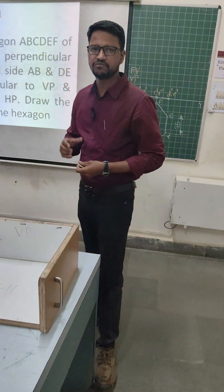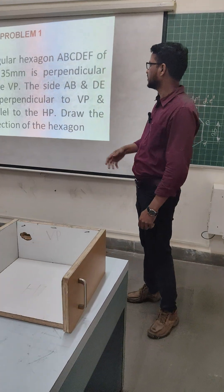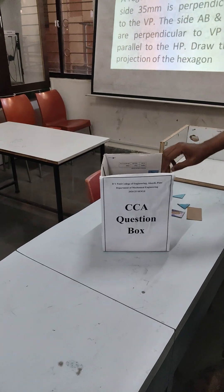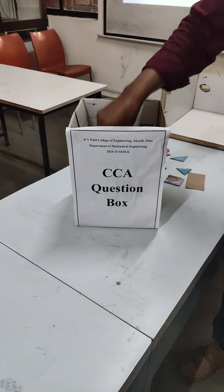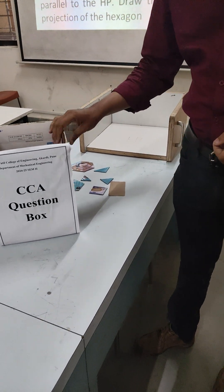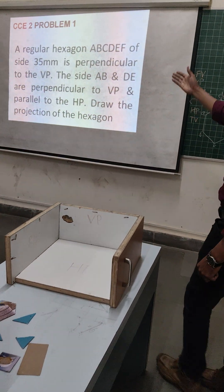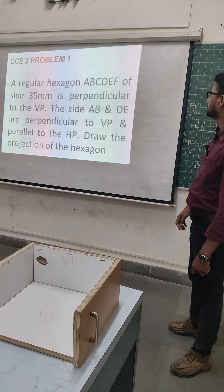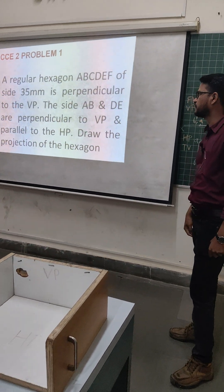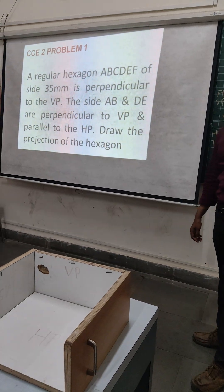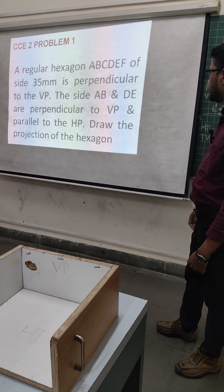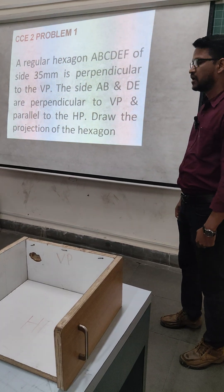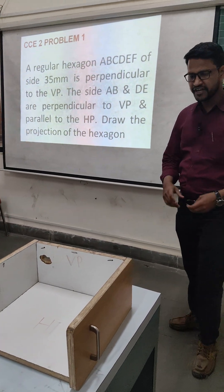Now, what we expect from you for CCA2: here is a box — CCA1 box. Take a sheet and open it. Now you attempt this one question. A regular hexagon ABCDEF of side 35 mm is perpendicular to VP. The sides AB and DE are perpendicular to VP and parallel to HP. Draw the projection of the hexagon.